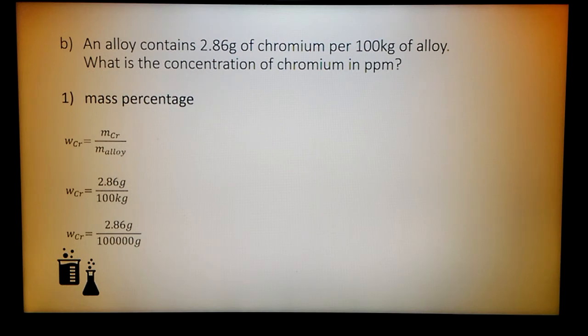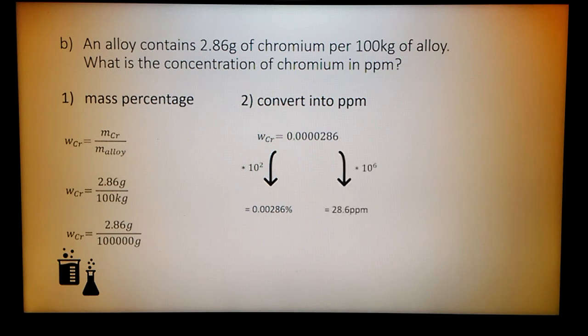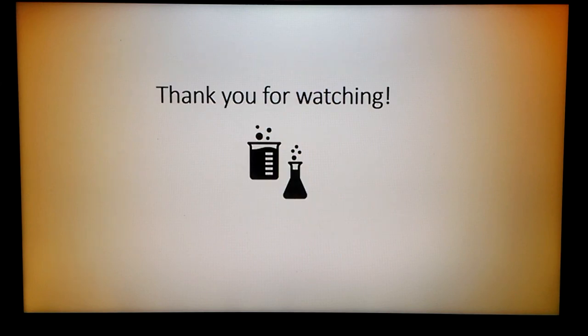At the end, you have to convert the result into ppm. For percent, you have to multiply it with 10 to 2. But you have to convert into ppm, so you have to multiply it with 10 to 6. The concentration of chromium in the alloy is 28.6 ppm.